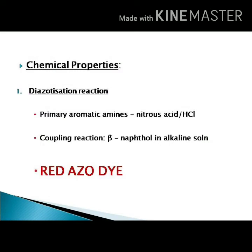Coming to the chemical properties of procaine: since it contains a primary aromatic amino group, it undergoes diazotization reaction. The compound is treated with sodium nitrite (NaNO2) in hydrochloric acid under ice-cold conditions (0 to 4 degrees centigrade) to form a diazonium chloride. That diazonium chloride is then subjected to a coupling reaction — treated with beta-naphthol in alkaline conditions — to form a bright red-colored azo dye, which identifies the presence of a primary aromatic amino group.